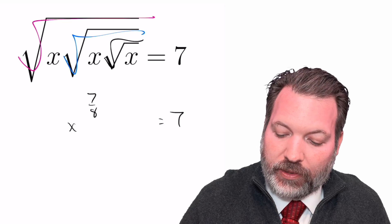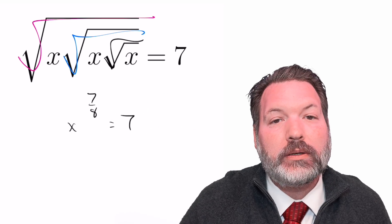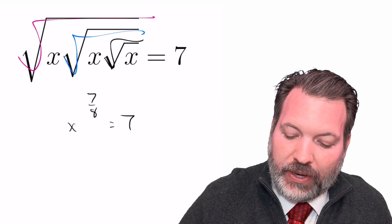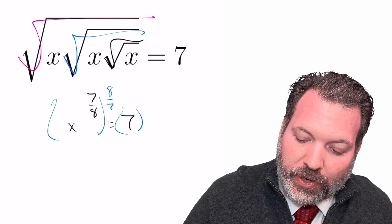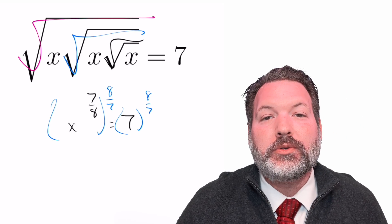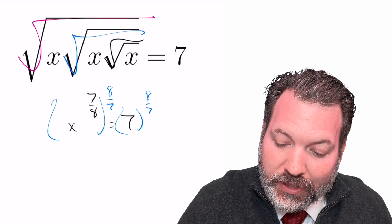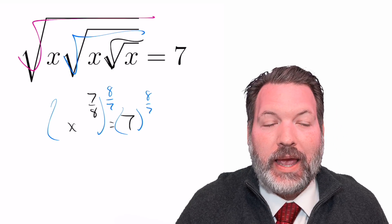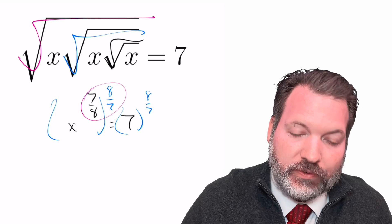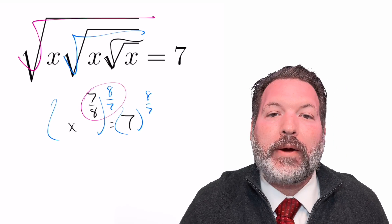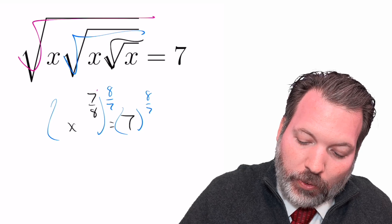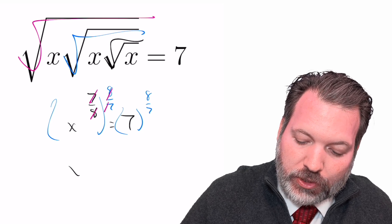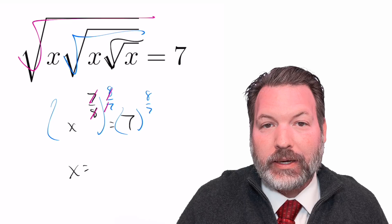For our last step to get this x by itself, let's do something that might appear a little bit strange at first. Let's raise both sides of this equation to the eight sevenths power. The reason I've chosen eight sevenths is that it's the reciprocal of seven eighths, and by raising a power to a power I'm going to multiply those reciprocals, which will cancel and give me back x to the first, which we typically write as x.